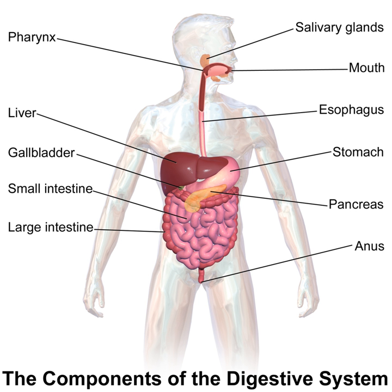The bolus will then travel down the esophagus and into the stomach by the action of peristalsis. Gastric juice in the stomach starts protein digestion. Gastric juice mainly contains hydrochloric acid and pepsin. It also contains renin in the case of infants and toddlers. As the first two chemicals may damage the stomach wall, mucus is secreted by the stomach, providing a slimy layer that acts as a shield against the damaging effects of the chemicals.